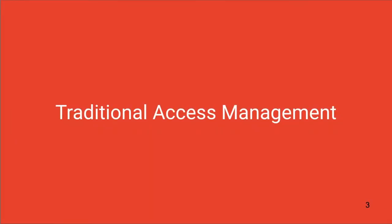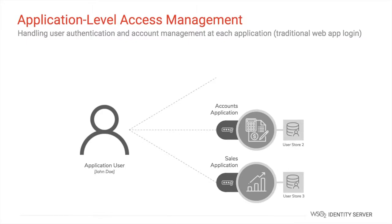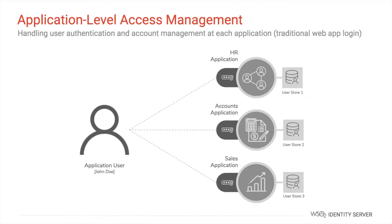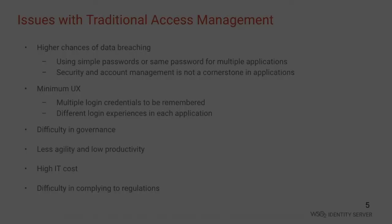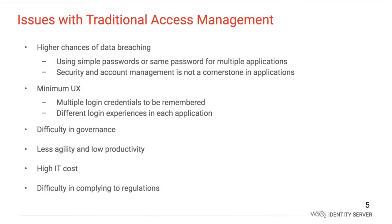Before diving into IAM, let's look at how a traditional organization infrastructure manages identities and access privileges. In the traditional access management approach, identities and privileges are managed within the application premises, compelling users to create user accounts for each application they want to access. For example, if John Doe needs to access three different applications, he should create three separate accounts for each application and maintain the corresponding credentials separately.